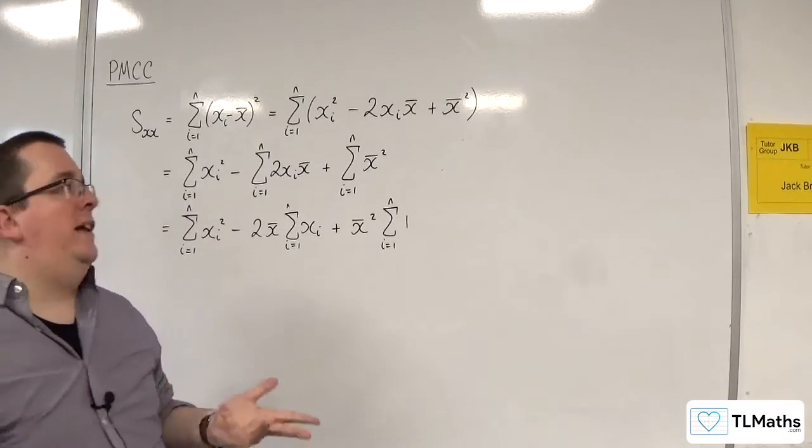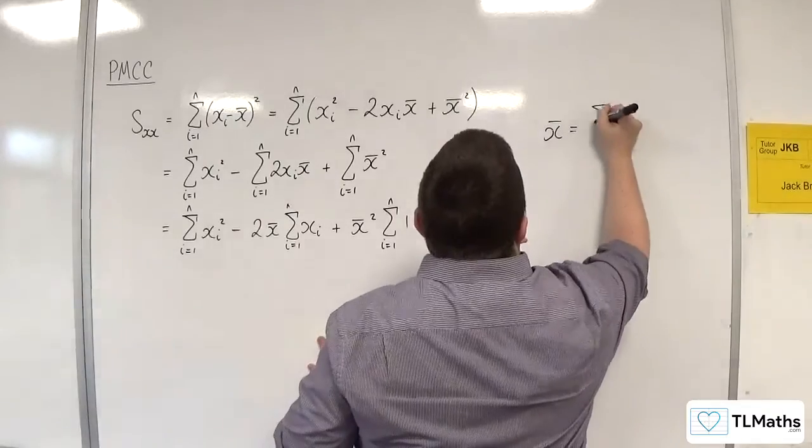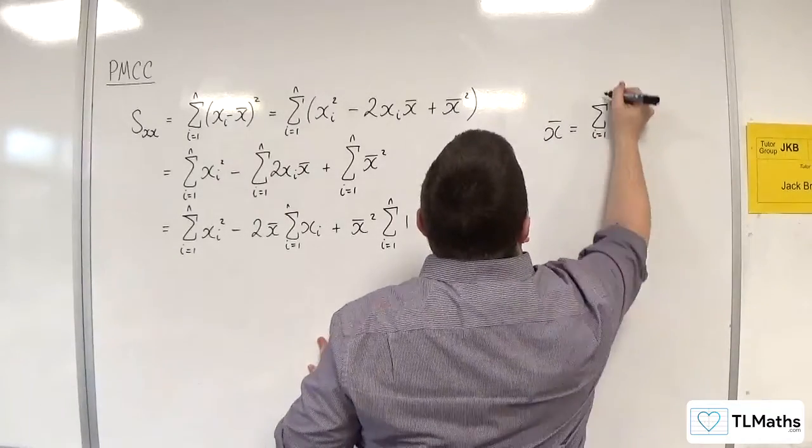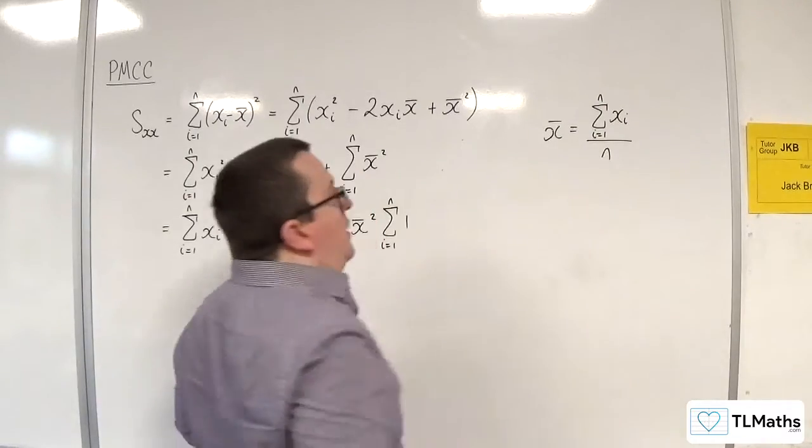Let's remind ourselves about what X bar actually is. So X bar is the sum from i is 1 to n of XI, so all of the X's, add them all together, divide by n.